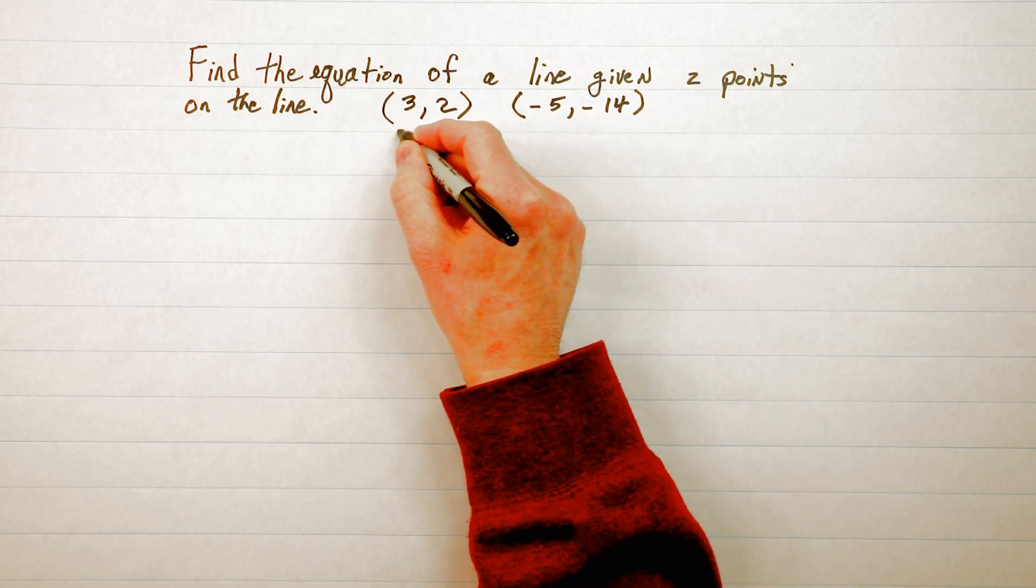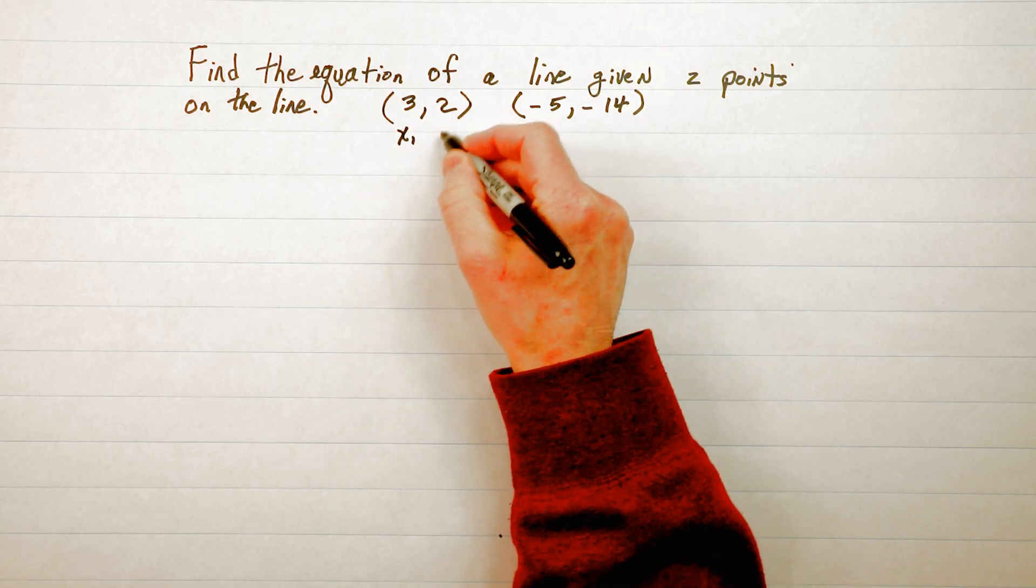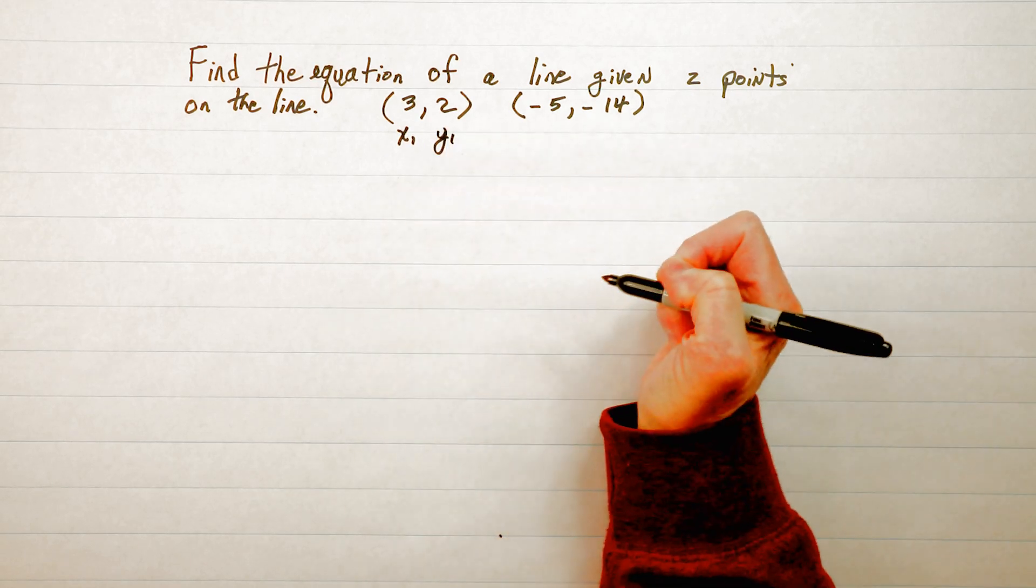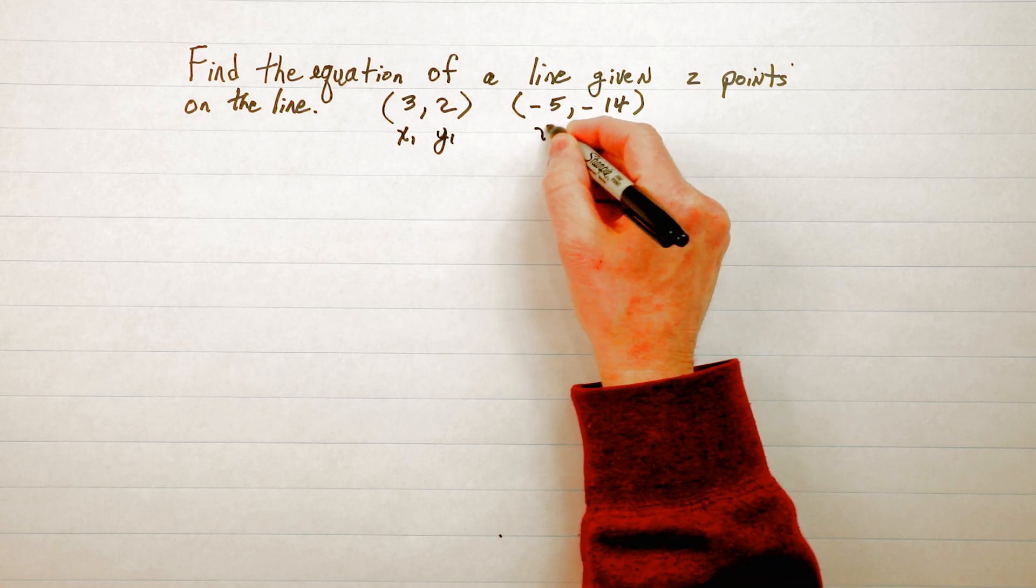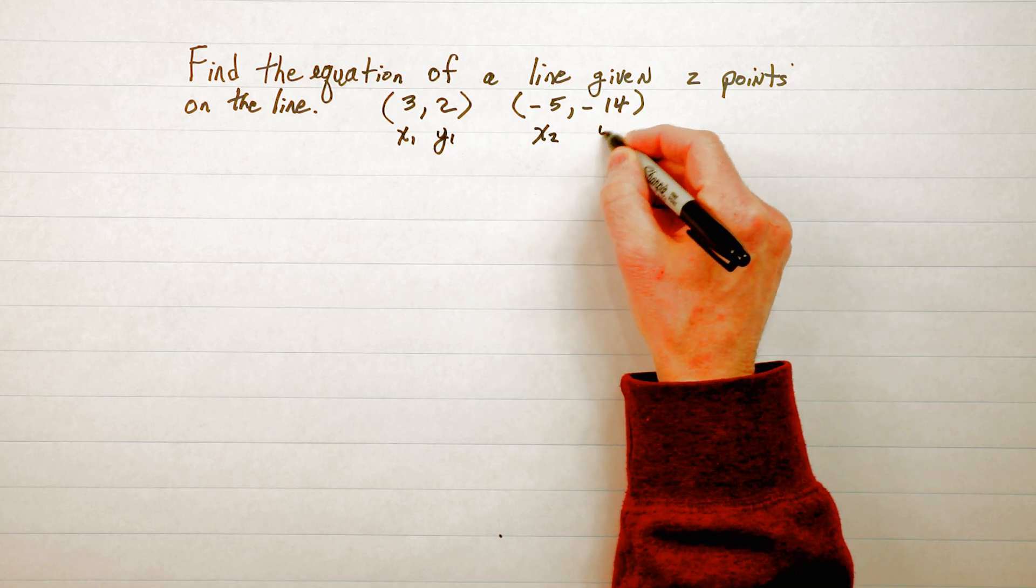So we're going to call 3 x₁ because it's part of the first point and 2 will be y₁. Then the second point -5 will be x₂ and -14 will be y₂.